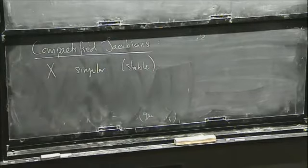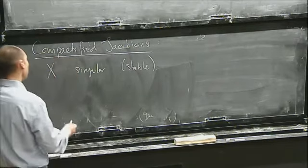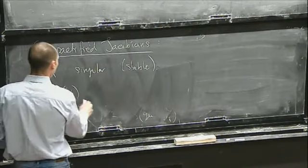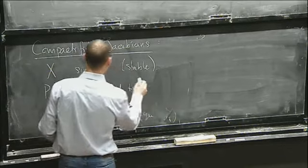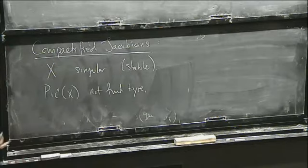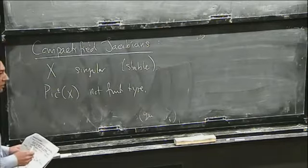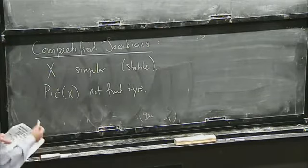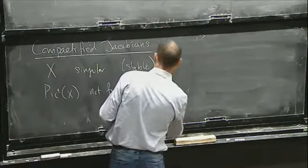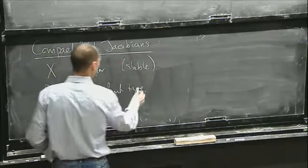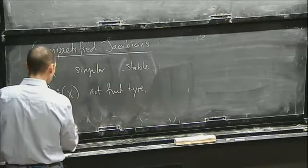You look at your singular stable curve and notice immediately that Pic^0 of X is not finite type, simply because you might have many components. So the degree zero part is not finite type. You can sort of fix that by just taking the connected component of the identity. And then you still have the issue that this Jacobian may not be compact. If you have a stable curve, you get an extension.